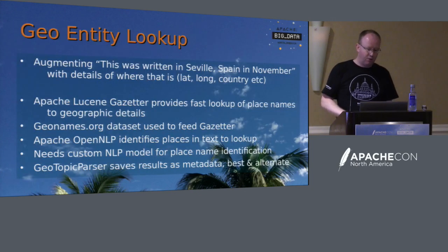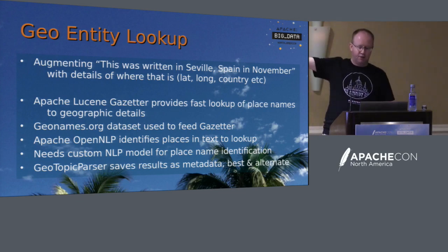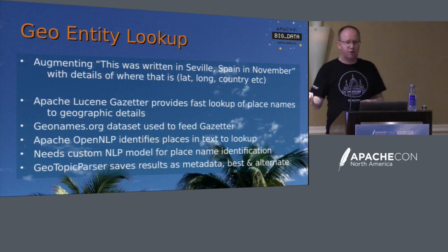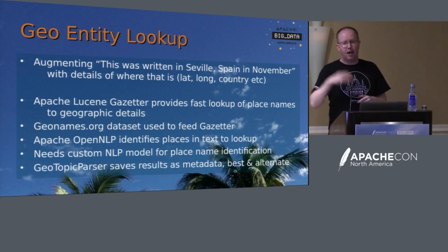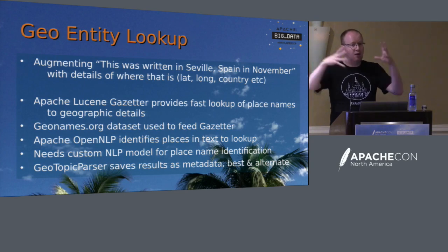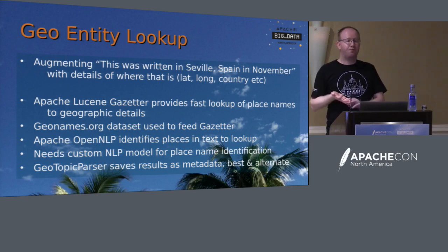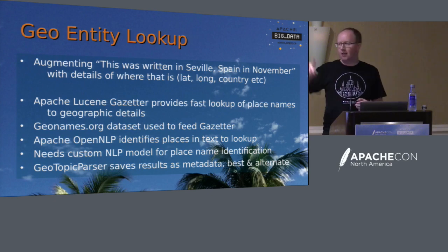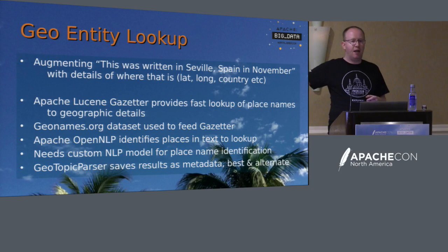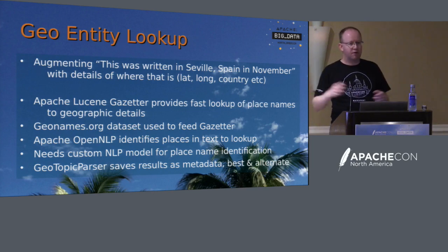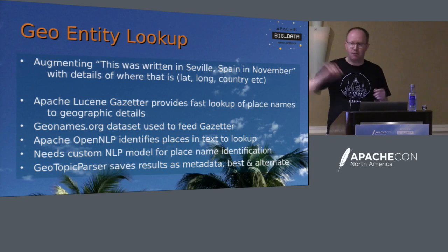Geoentity lookup is quite a fun one. If you take the text 'this was written in Seville, Spain in November,' it can spot that Seville, Spain is a place and look up the latitude and longitude — so you can take a piece of text that doesn't have explicit geotagging the same way a geotagged image does and work out that this document is describing a place. That's powered by Apache Lucene and the GeoNames database. If you're going to do custom named entity recognition stuff and lookups, the source code for this is a really good template for how to hook in named entity recognition with quick lookups.